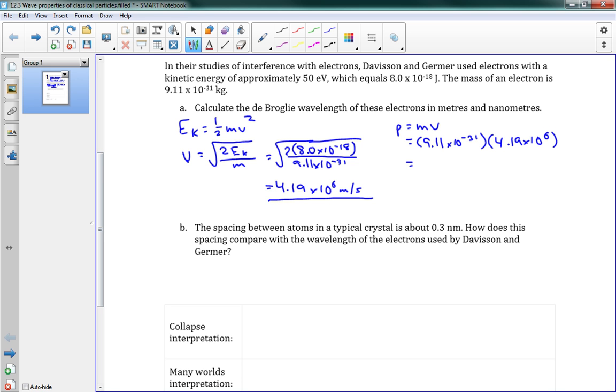And that gives us 3.82 times 10 to the negative 24. So, that's our momentum, and that's units of kilograms meters per second. And finally, we need to get our wavelength.